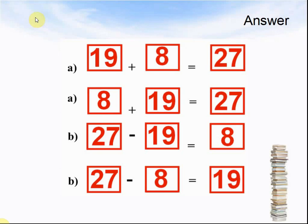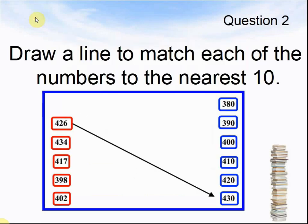Let's look at Question 2: draw a line to match each of the numbers to the nearest 10. For example, 426 — the nearest 10 to 426 is 430. What is 434 rounded to the nearest 10? What is 417 rounded to the nearest 10? What is 398 rounded to the nearest 10? What is 402 rounded to the nearest 10? Pause the video until you are ready for the answer.